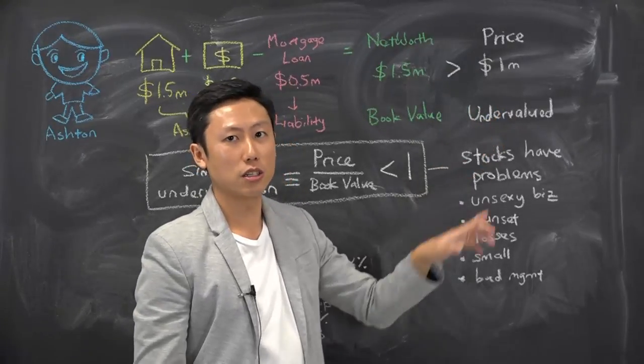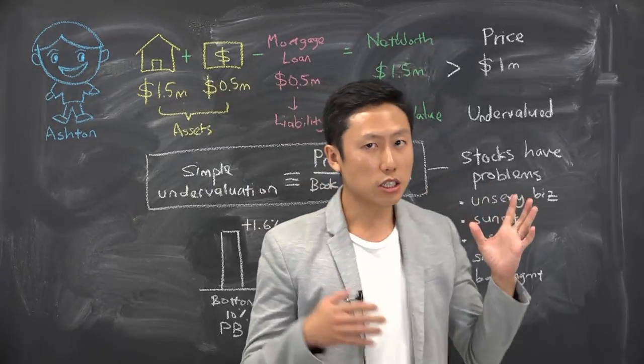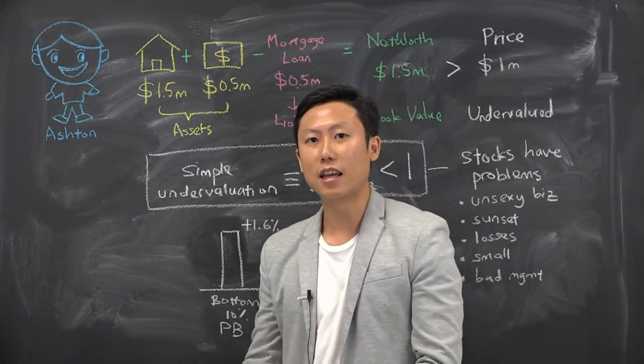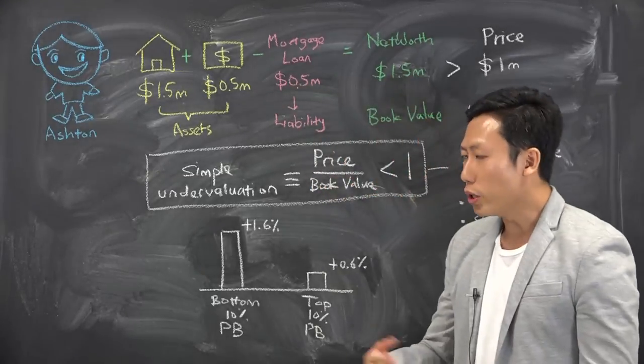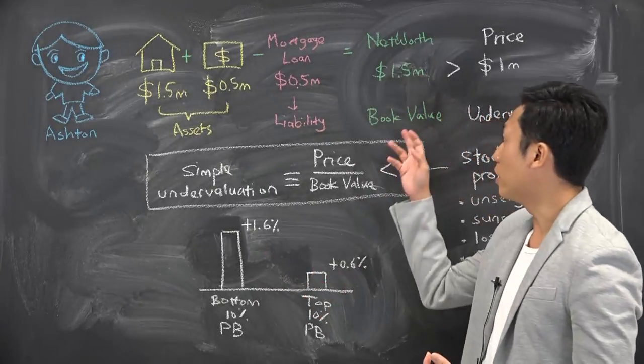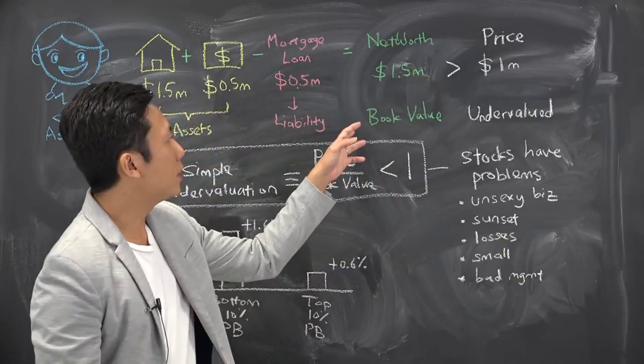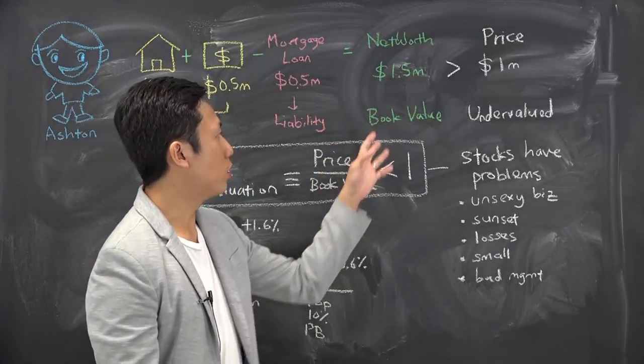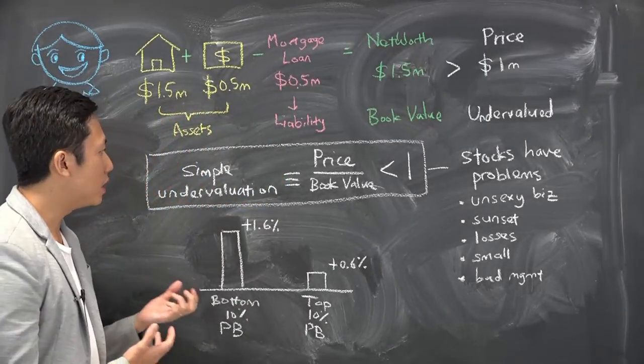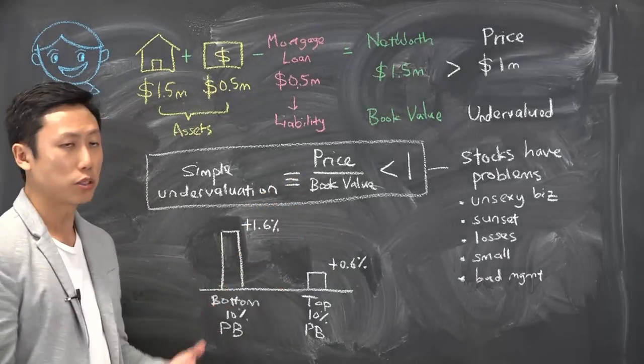Stocks can also be seen as using assets and liability to assess the net worth of a stock. We don't use net worth to determine whether a stock is undervalued, we call it book value. It's actually an accounting method to determine how much the company is worth. The simplest way is to determine whether the price is below the book value of the company.